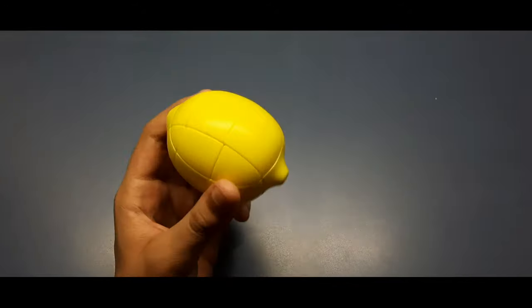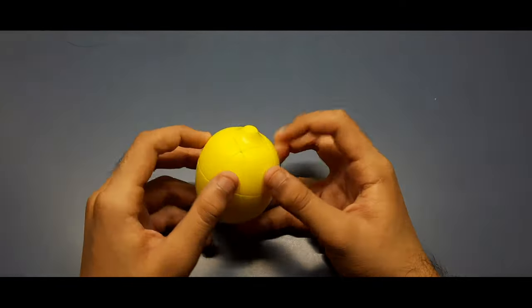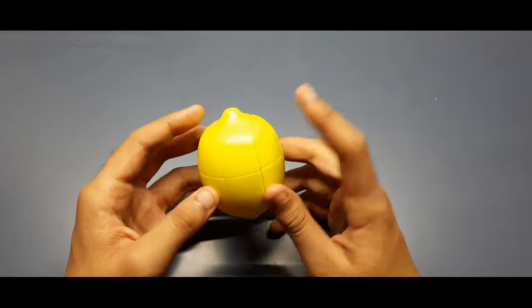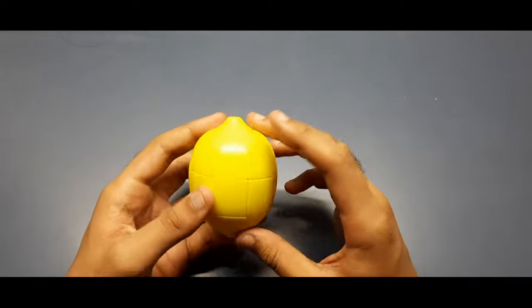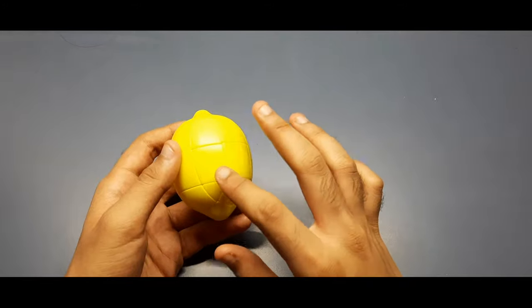So this is the shape mod of 3x3, so it won't be very difficult to solve. And since side parts are very similar, so it won't be very difficult for solving the first and the second layer. Like the parts may be flipped upside down or flipped at its position. So that's not the problem.